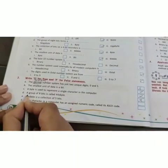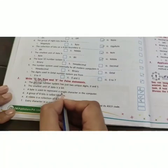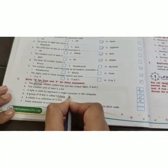A group of 8 bits is called kilobyte. False. The correct statement is a group of 8 bits is called byte.